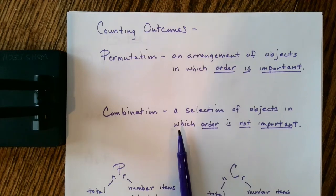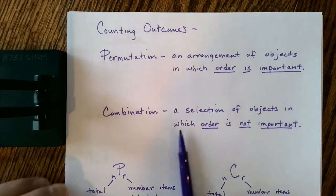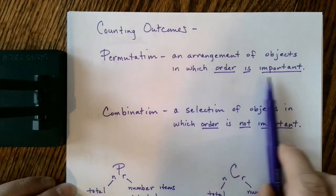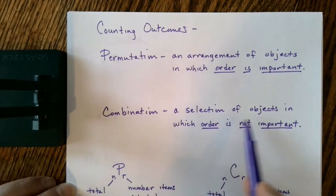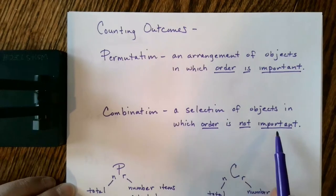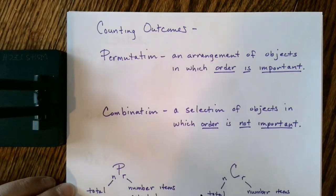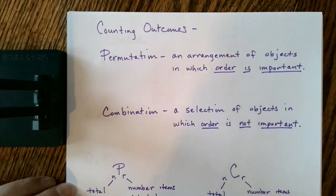Really it's very simple — it comes down to whether you're concerned about the order in which things are counted or not. A permutation is an arrangement of objects in which order is important. A combination is a selection of objects in which order is not important. Notice the word 'arrangement' — anytime you arrange something, that means you're placing importance on sequencing or various other things like that.